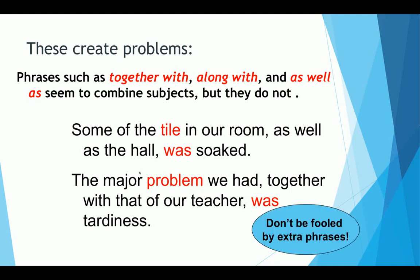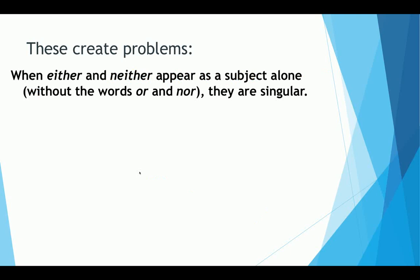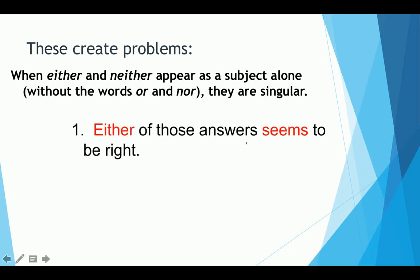Don't be fooled by extra phrases. When either and neither appear as a subject alone without the words or or nor, they are singular. Either of those answers seems to be right. So although you have answers here in the plural, you only have either. You don't have or, you don't have nor, so it should be singular. Your verb needs to agree with those words.